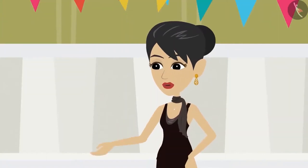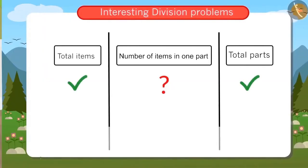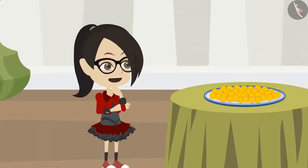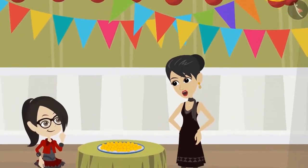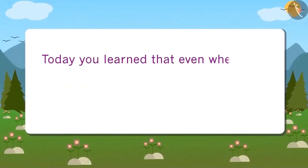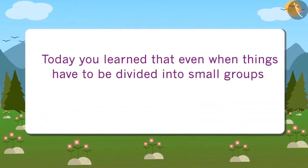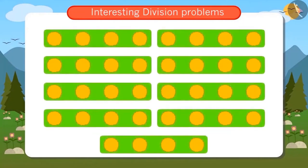Never mind Vandana. Now you should remember this simple way. Last time we learnt that when we are given the number of parts and have to find out the number of items in them, we use division. Today we learnt that when we know how many things will come in one part, we still use division. Now go quickly — the ladoos are to be packed before the guests arrive. Today you learnt that even when things have to be divided into small groups, division can be useful, just as Vandana divided 36 ladoos into groups of 4.